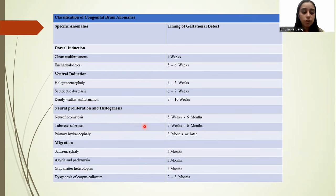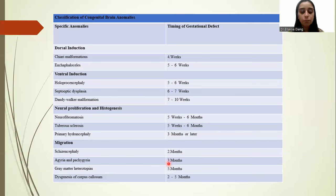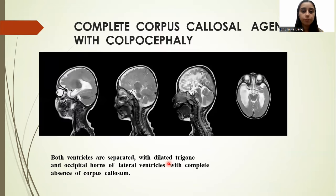Under migration, there are 4 diseases: schizencephaly, detected by 2 months of gestation; agyria and pachygyria, detected by 3 months of gestation; gray matter heterotopias, detected by 5 months of gestation; and dysgenesis of the corpus callosum, detected by 2–5 months of gestation.